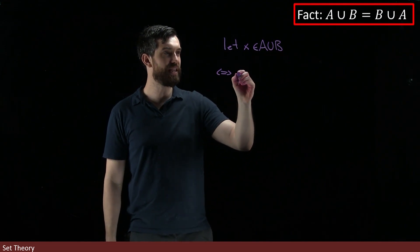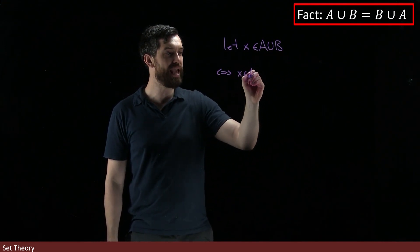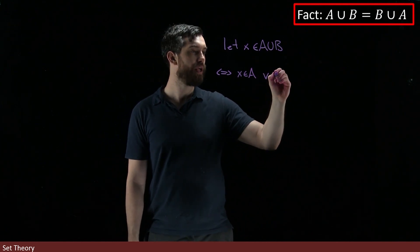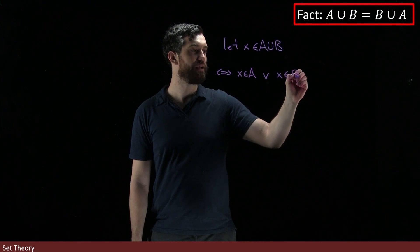X is in A union B is the same thing as X is in A, or I'm going to put this symbol for my disjunctive or, X is inside of B.